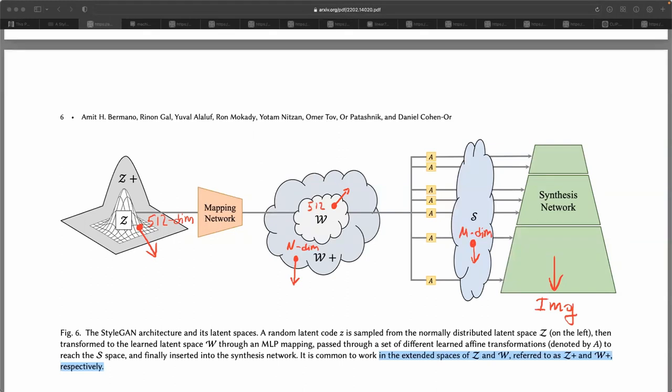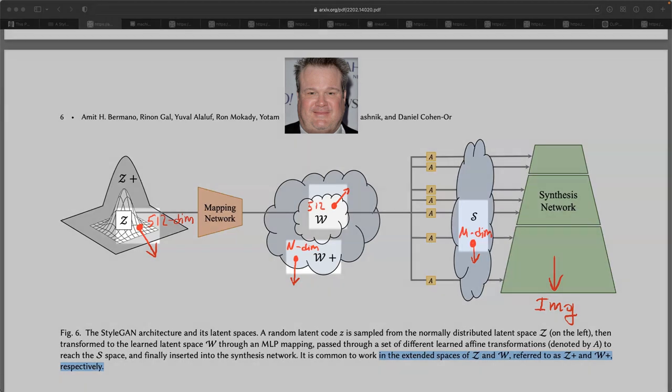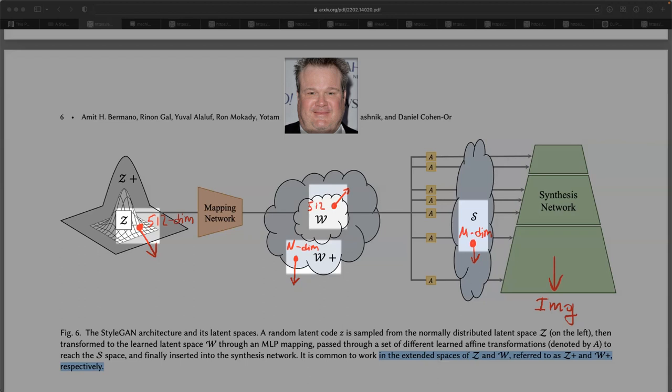But if we want to edit a face from a real image, first we need to identify the point in latent space that represents that real image. This mapping from a real image to a point in one of these high-dimensional latent spaces is called inversion of a real image into the latent space.